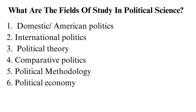1. Domestic or American politics. This is the largest section of political science. It refers to the study of political activities within a particular country's borders. For example, students in America focus on American politics. Also known as civics in some countries, this field focuses on political parties, lawmaking, the constitution, public administration, the justice system, voting, and other political processes.